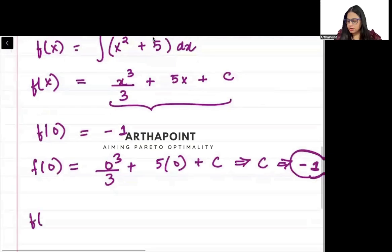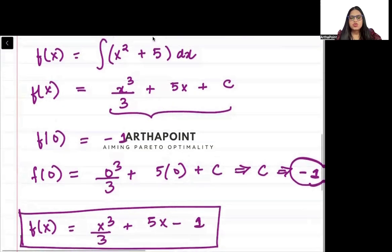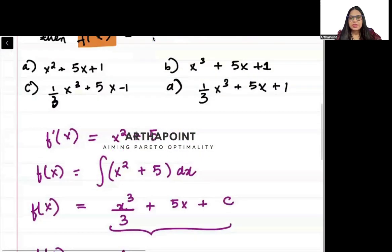So finally, what will be our function? f(x) will become x³/3 plus 5x minus 1. And this will be the answer to your question. x³/3 plus 5x minus 1.